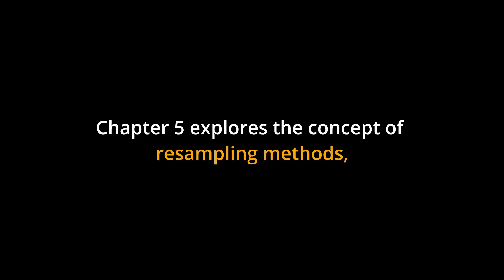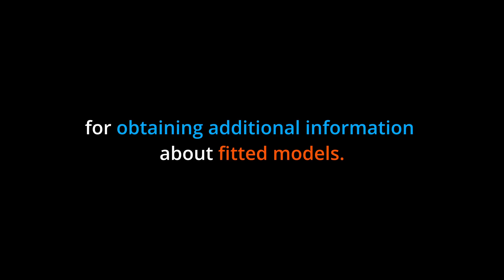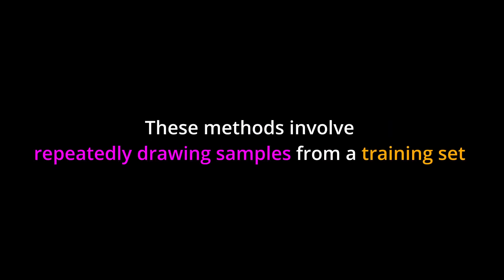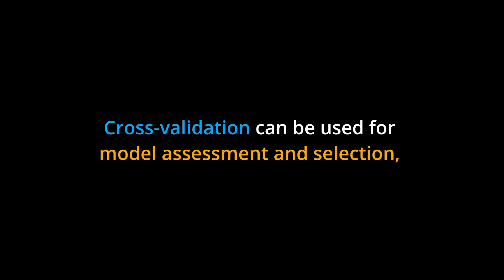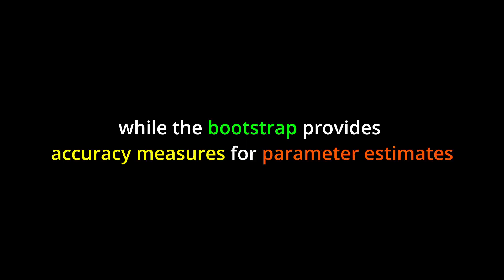Chapter 5 explores the concept of resampling methods such as cross-validation and bootstrap, which are important tools in statistics for obtaining additional information about fitted models. These methods involve repeatedly drawing samples from a training set and refitting the model on each sample. Cross-validation can be used for model assessment and selection, while the bootstrap provides accuracy measures for parameter estimates or statistical learning methods.